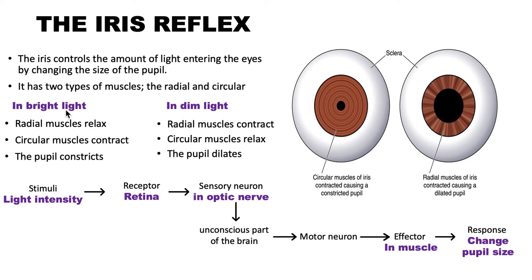So inside the iris, during exposure of the eye to bright light, the pupil has to become smaller so that the amount of light entering the eye is not too high. The circular muscles have to contract, and where they contract, the pupil size is going to become very small — as you can see here. It will constrict. The scientific word you can use here is that the pupil constricts.